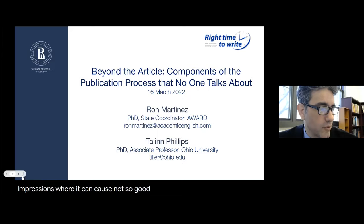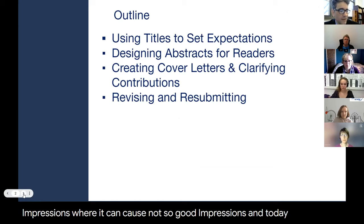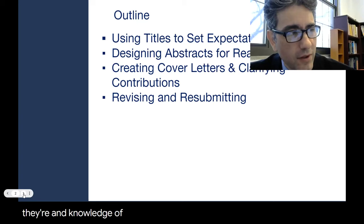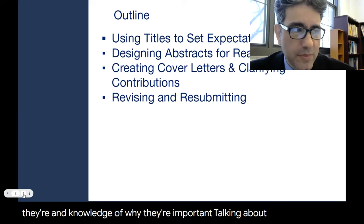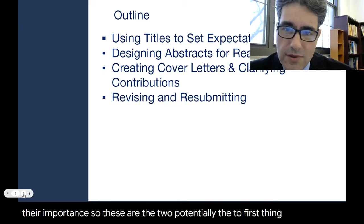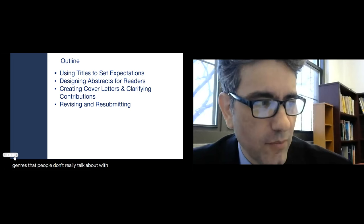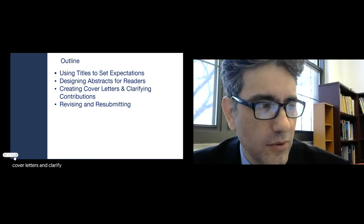Today we're going to start with titles. You might not have thought a whole lot about what a title can do, but today I hope you come away with practical tips on how to improve titles and why they're important. Talin is going to talk about abstracts. These are the two first things you see on a manuscript, and then what are sometimes called occluded genres — cover letters and clarifying contributions — and finally a little bit about revising and resubmitting.